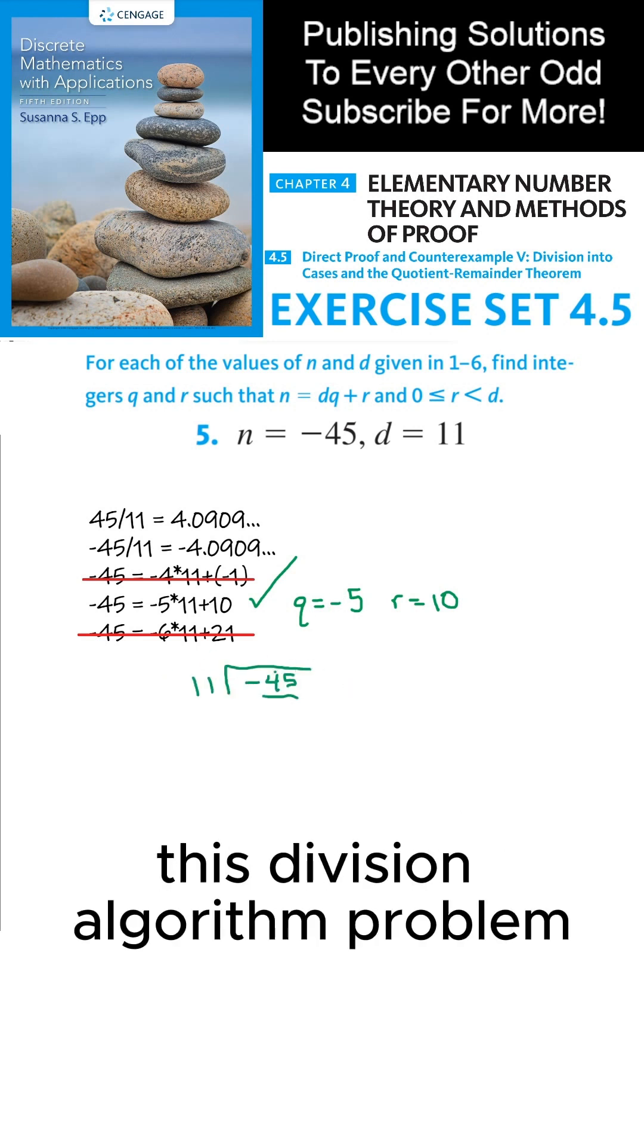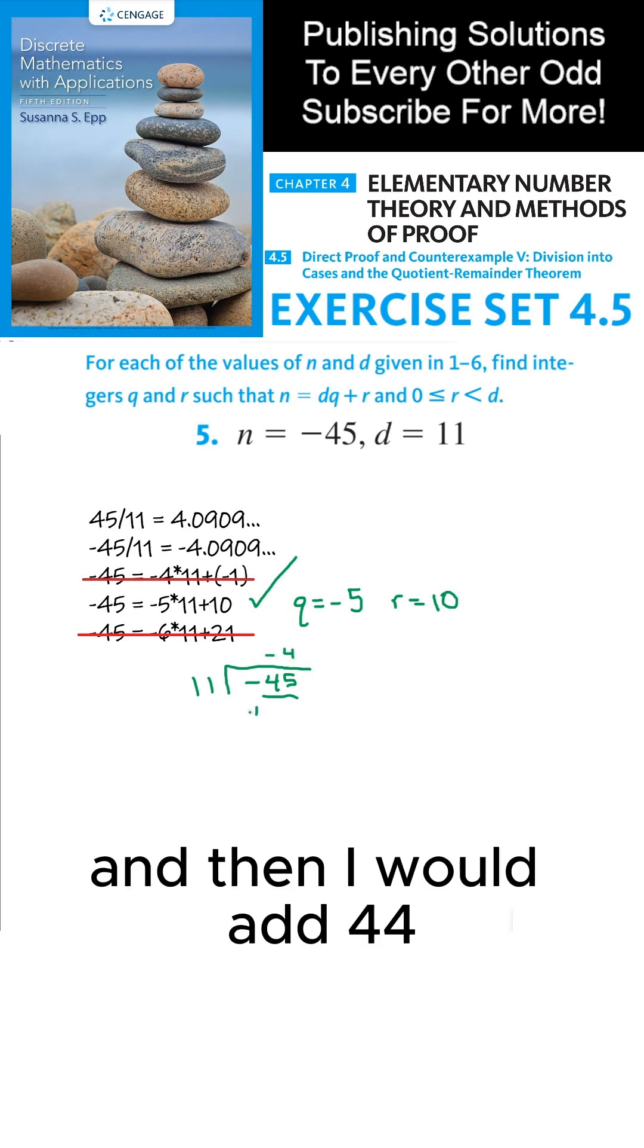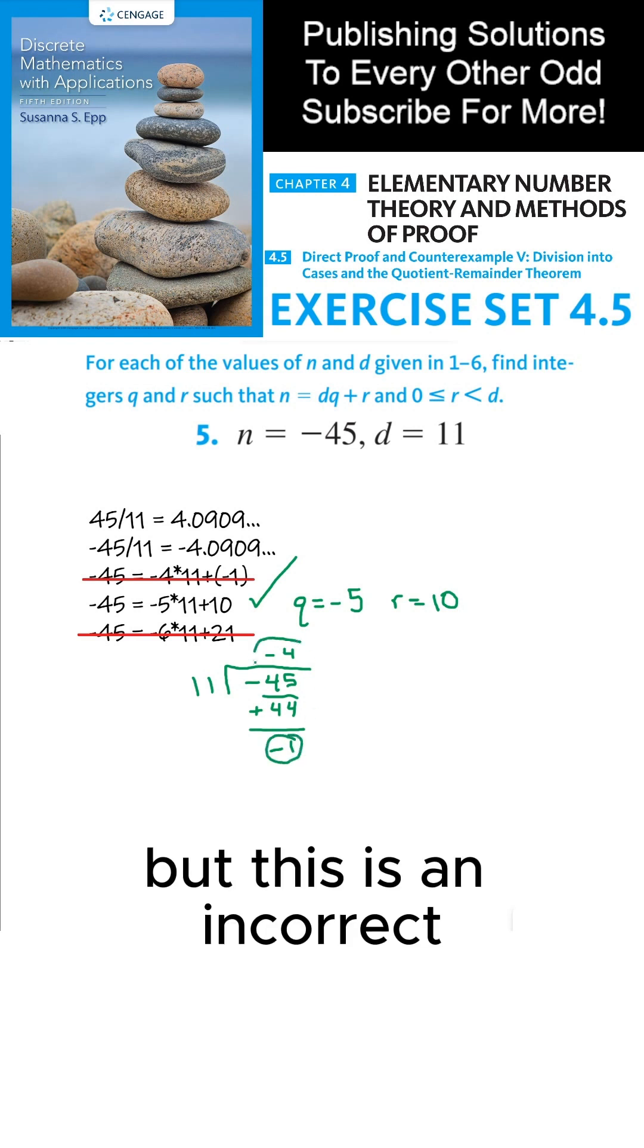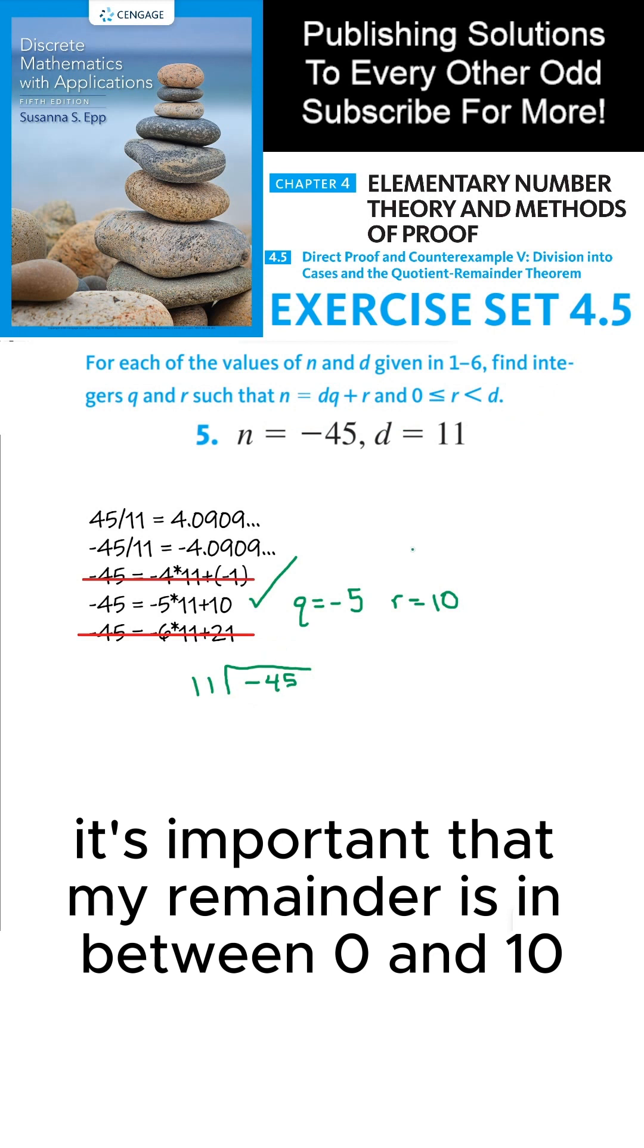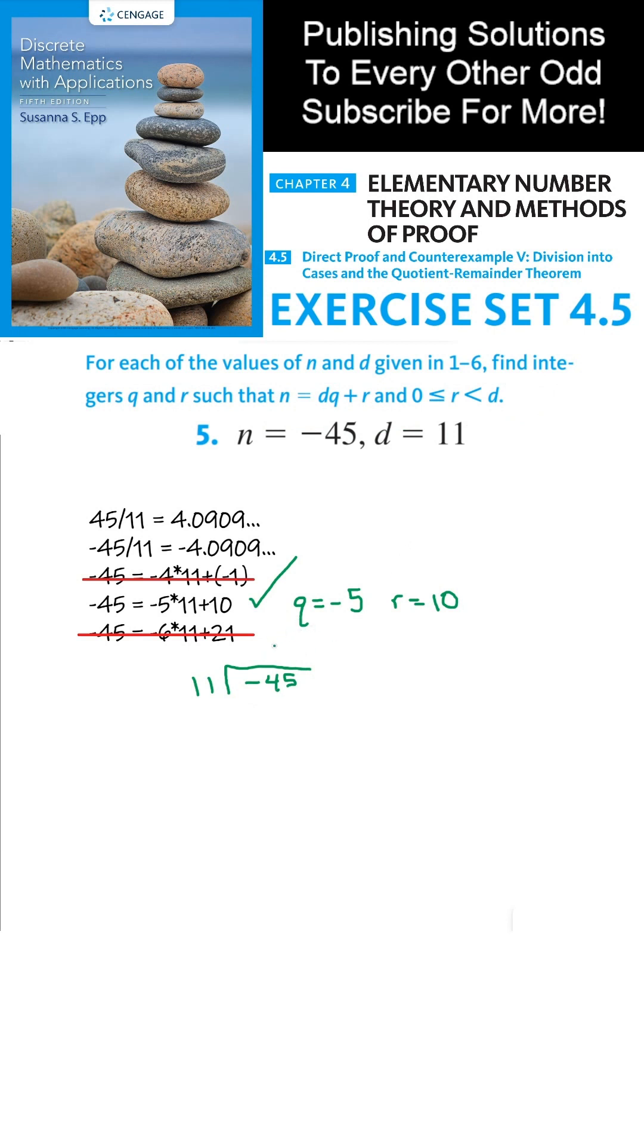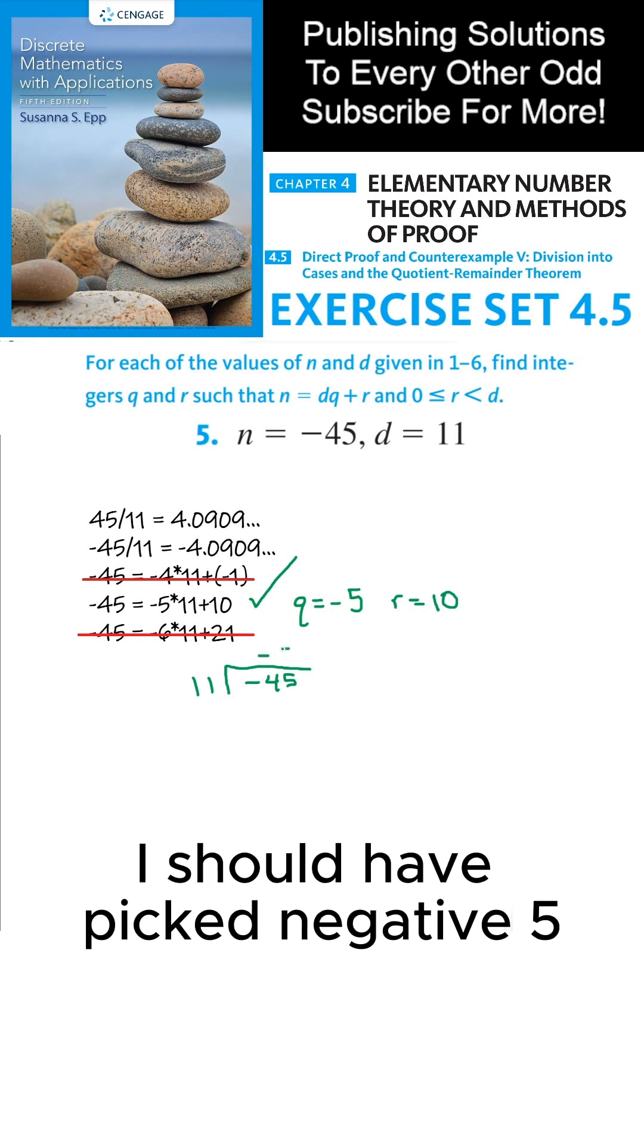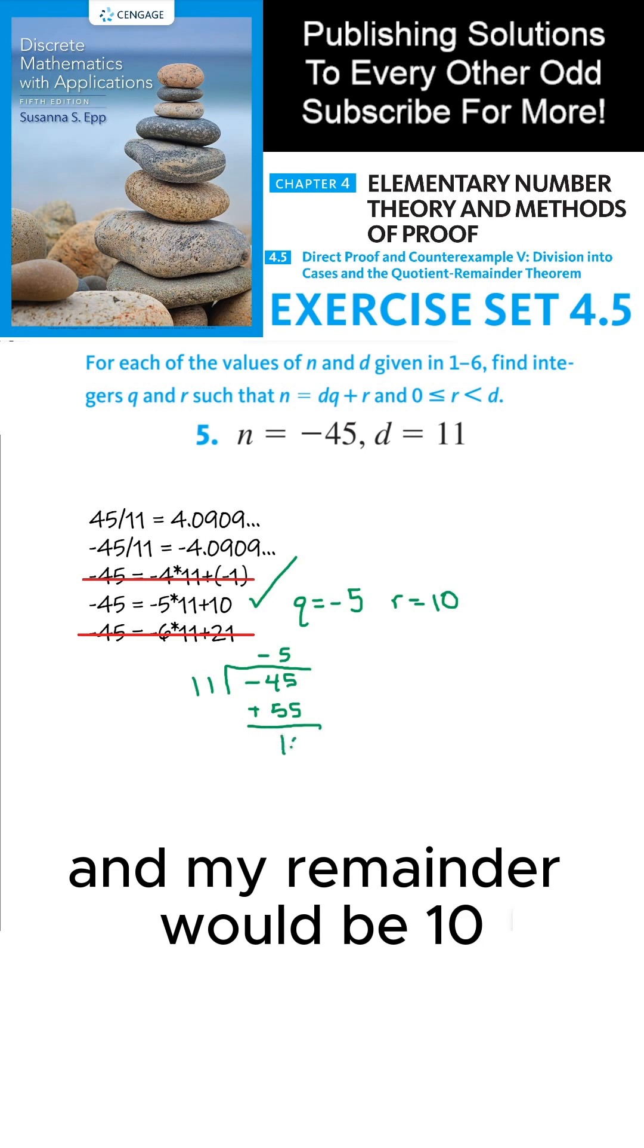If I were to approach this division algorithm problem, I would put negative 4 here and then add 44 to get a remainder of negative 1. But this is an incorrect application of the division algorithm. It's important that my remainder is in between 0 and 10. Instead of picking negative 4, I should have picked negative 5 so that this was positive 55 and my remainder would be 10.